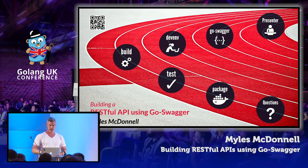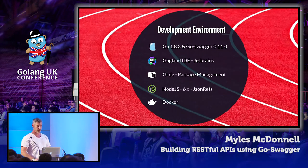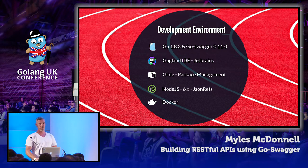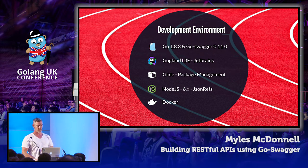So that's Swagger and Go-Swagger. I'm going to run an interactive demonstration as we go through. The components of the development environment: we're using the latest version of Go, 1.8.3, and the latest version of Go-Swagger, which is 0.11 — which would suggest it's not production-ready by the version numbers. I've had a service running in production for 12 months with no problems, so I would consider it production-ready, though it hasn't been tested against an incredibly high load.